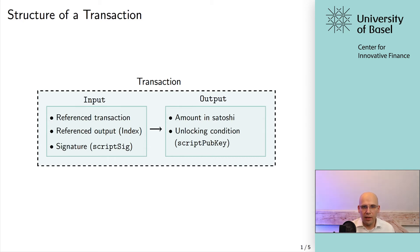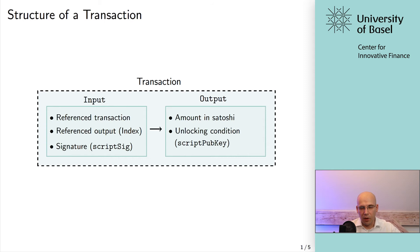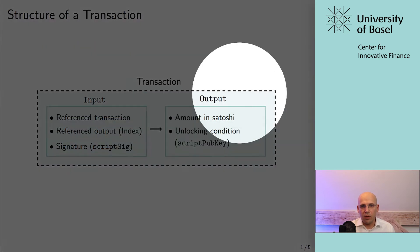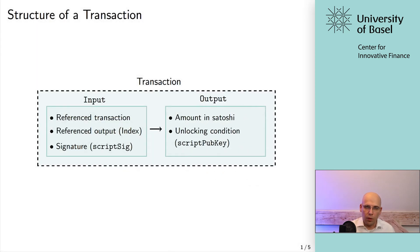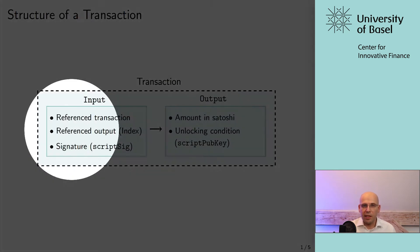To recap: you basically have the transaction as just a container for value, where you're assuming some value from an earlier confirmed transaction, using that as your input, and then you're creating new outputs with your own conditions — basically moving or switching the conditions under which these Bitcoin units can be spent. That is the transaction from a more technical point of view. Intuitively, of course, the transaction is just moving value from A to B — you can think of it as sending Bitcoin from person A to person B.